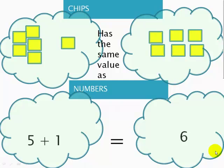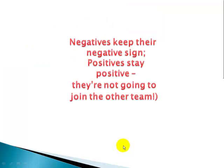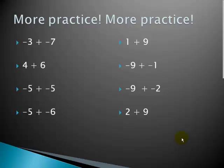Clouds, or clouds around everybody. This side has the same value as this side. It doesn't matter how complicated I make this look. That equal sign means they have the same value. Same sign, same team. Add and keep your sign. Negatives keep their negative sign. Positives stay positive. They're not going to join the other team.